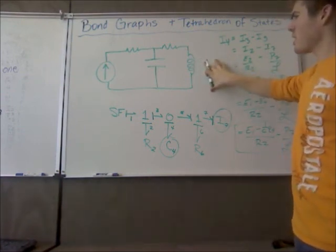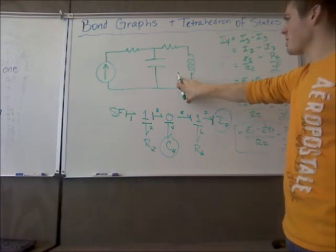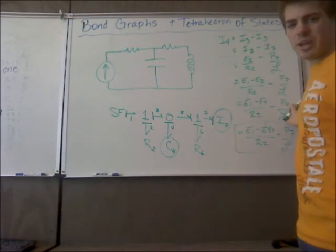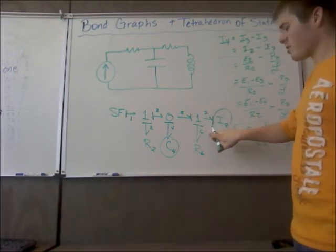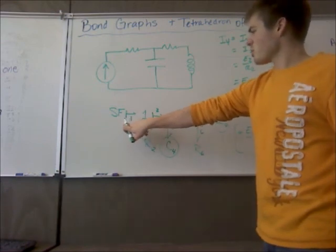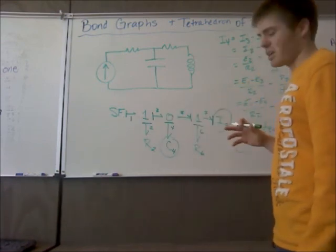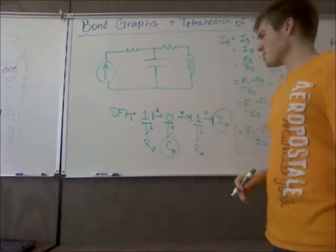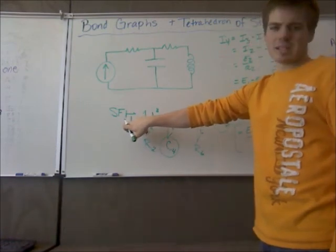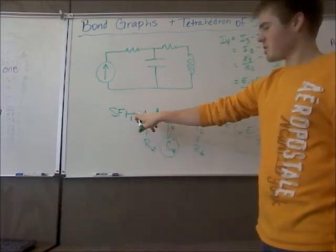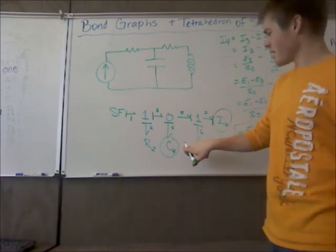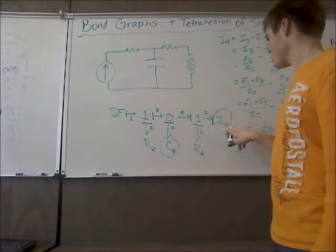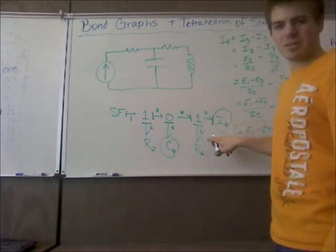I just walked you through the entire bond graph system solution from start to finish. You might have to watch it a couple more times. Remember causal strokes: you've got your source flow and your source effort. Your effort is going to push and your flow is going to flow. So you have causal stroke on the back side for the flow, causal stroke on the front side for effort. A capacitor likes to have an effort and an inductor naturally likes to flow. A resistor will have it either way.